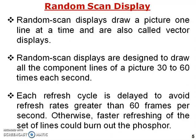Random scan display is another method of refreshing or reconstructing the picture. It draws a picture one line at a time and is also called a vector display. Whatever number of lines are there, that is the actual refresh rate. Instead of refreshing the whole screen, it refreshes only the lines. Random scan display draws all component lines of the picture during each refresh cycle.